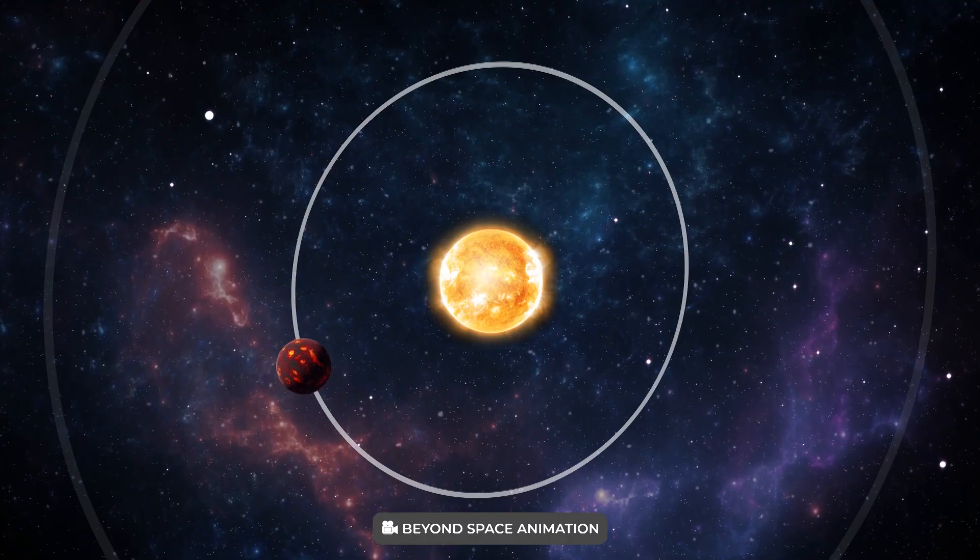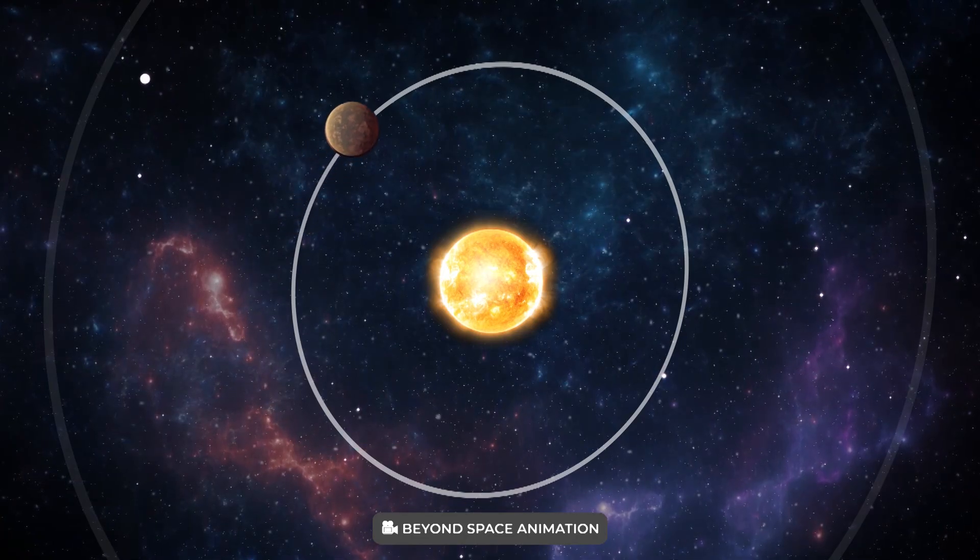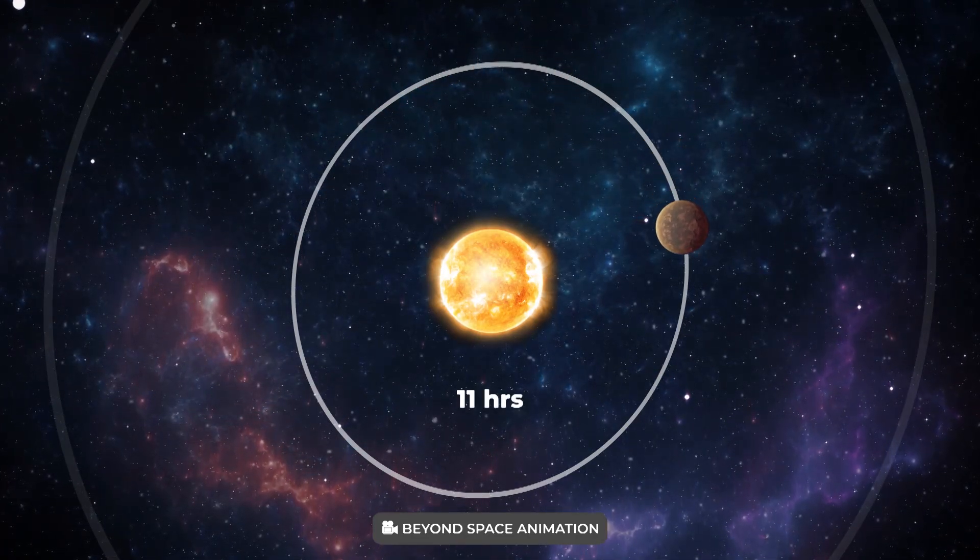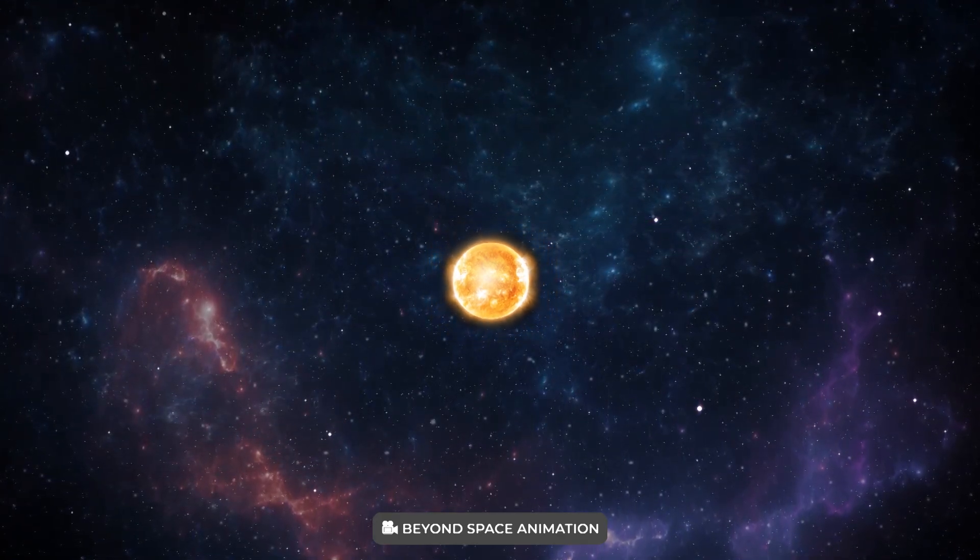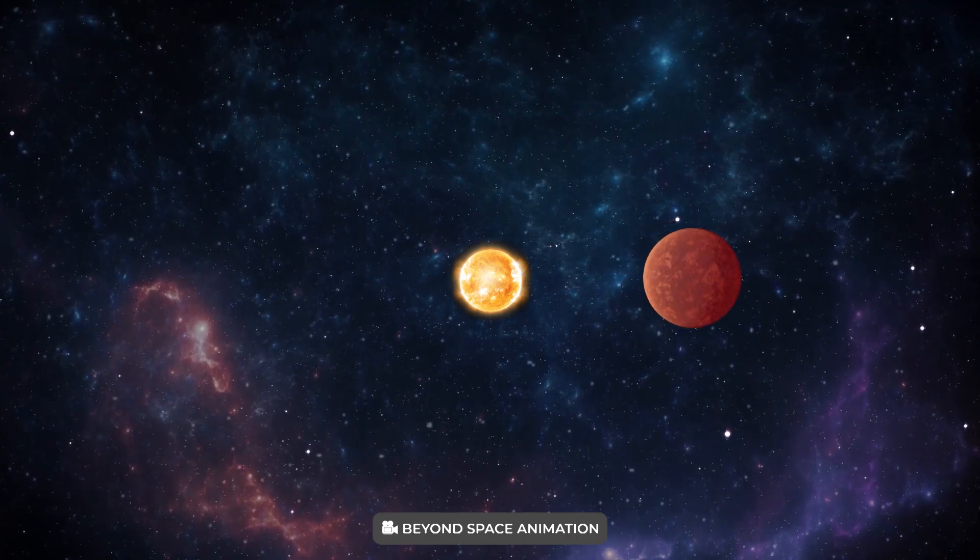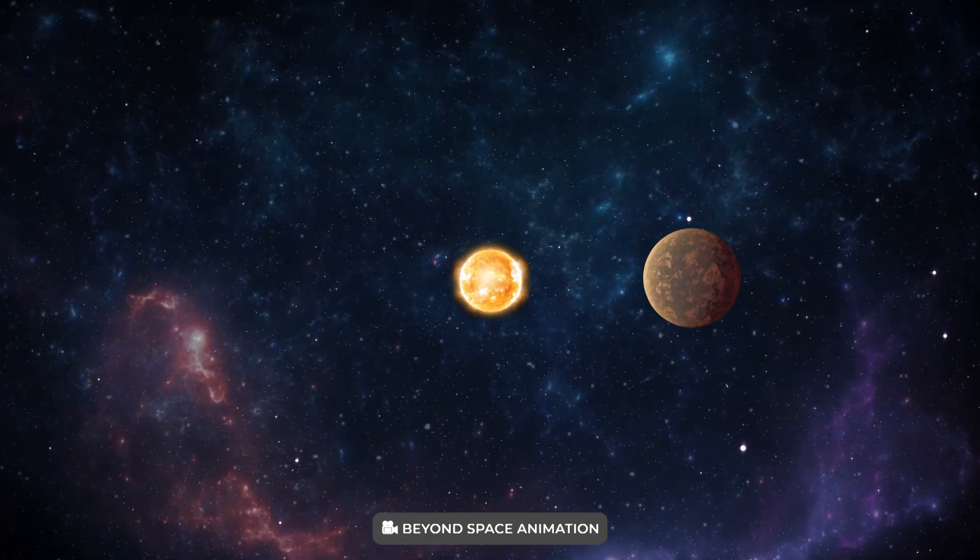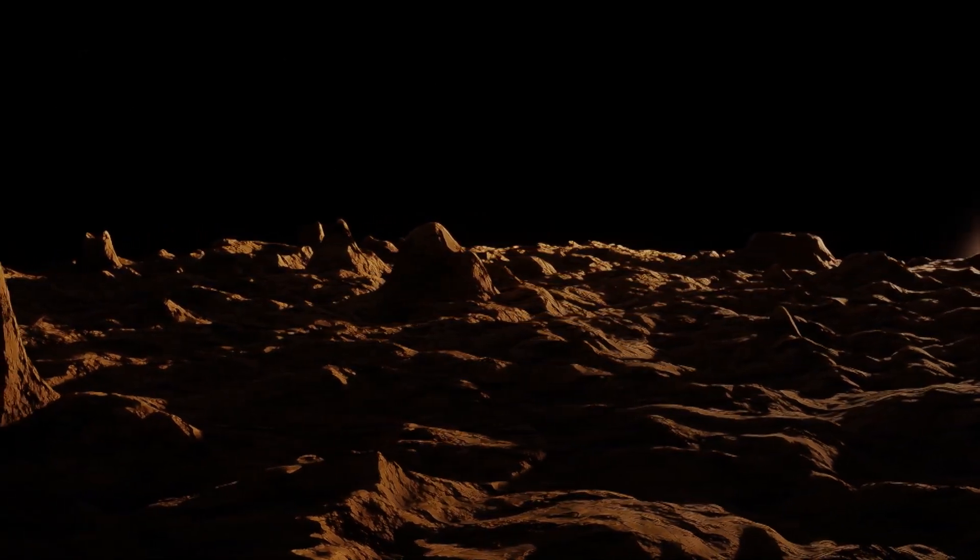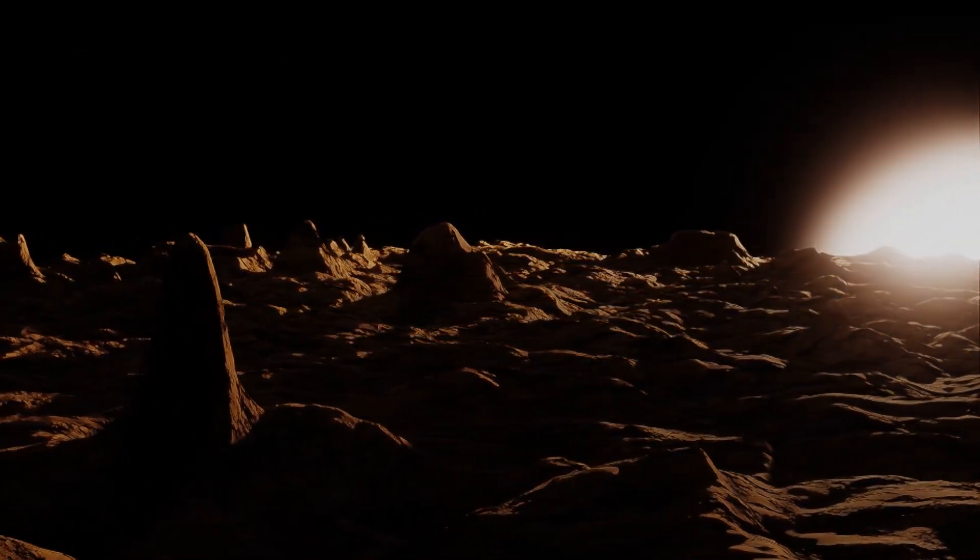Like 55 Cancri e, LHS 3844b orbits extremely close to its star, completing one revolution in 11 hours. However, because its star is relatively small and cool, the planet is not hot enough for the surface to be molten. Additionally, Spitzer observations indicate that the planet is very unlikely to have a substantial atmosphere.